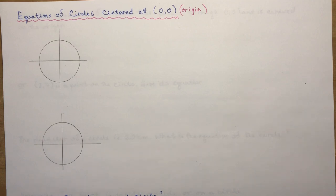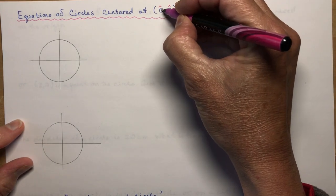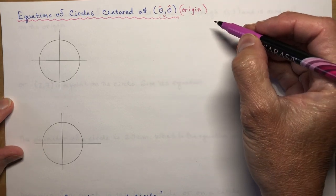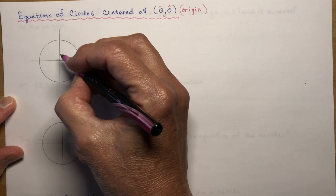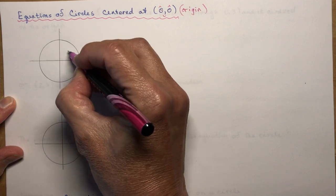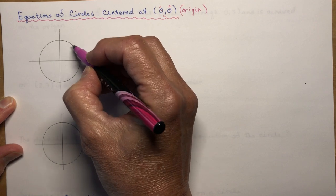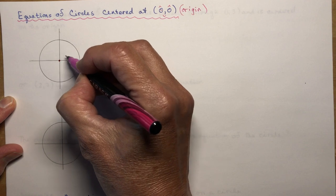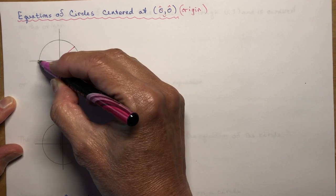Equations of circles centered at zero, zero, also called the origin. It looks kind of like a little owl here, or a little face. When we're defining the equation of a circle, we're going to develop it by thinking about what we know about the length of a line segment. When you have a circle, the distance from the center of the circle out to any point on the circle is the same.